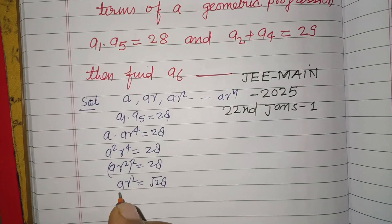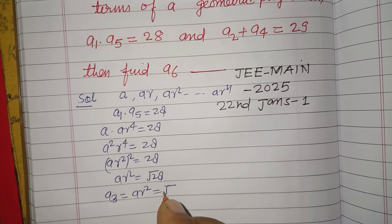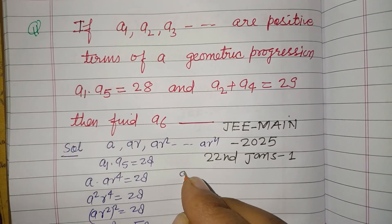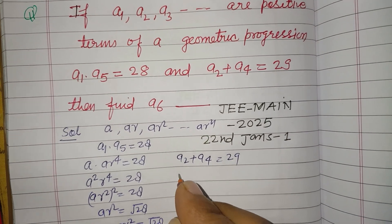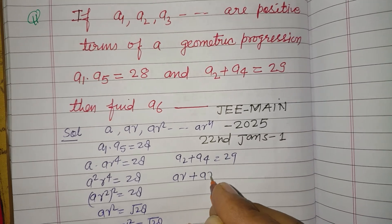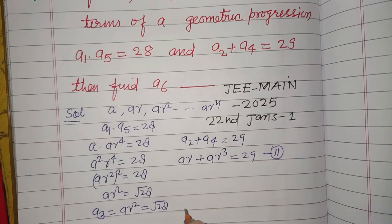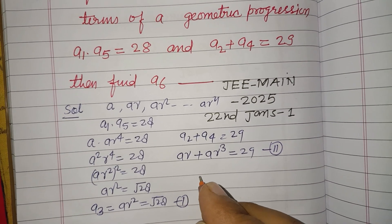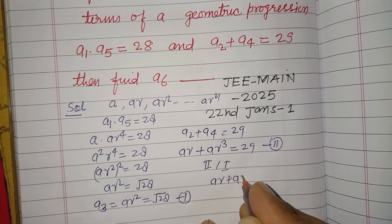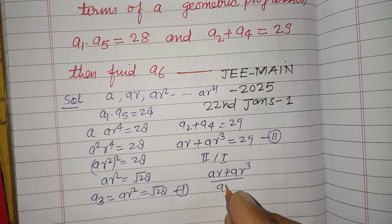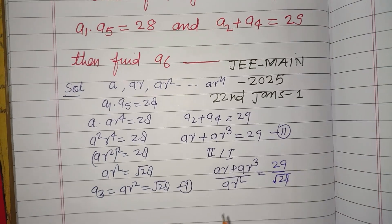Therefore ar² = √28, which is our third term a3 = ar² = √28. The second condition is a2 + a4 = 29. Substituting: ar + ar³ = 29. Dividing this second equation by the first: (ar + ar³) / ar² = 29 / √28.